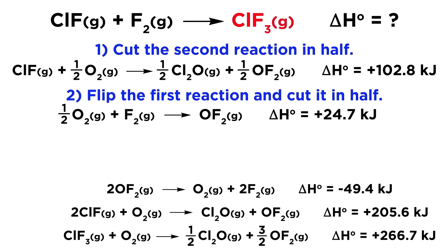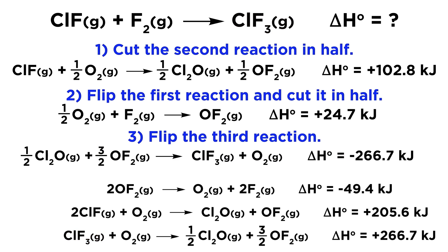Lastly, we need ClF3. Where can we find this in our given data? Well this is found in the third equation, and it is a reactant with a coefficient of one, so we don't need to multiply or divide, but we do need to flip it around so that this becomes a product. So let's rewrite this with the reactants as products, and the products as reactants, without changing any coefficients. And then we simply take the delta H, and we flip the sign, since we flipped the equation. So positive 266.7 kilojoules becomes negative 266.7 kilojoules.